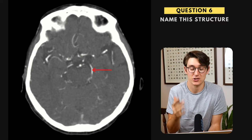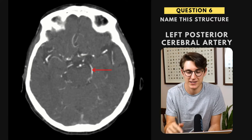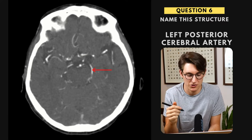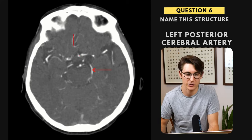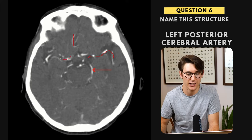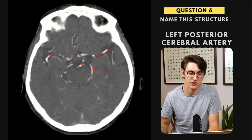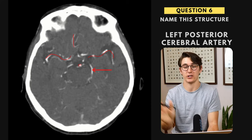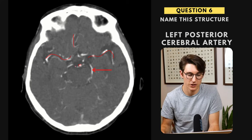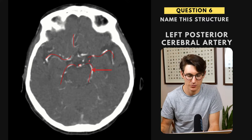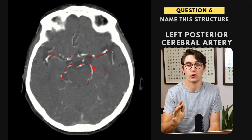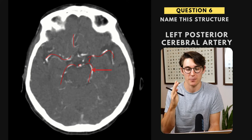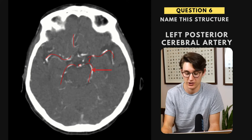Question number six, we're asked to label a vessel, and this is the left posterior cerebral artery. We're at the level of the circle of Willis. We can see our anterior cerebral artery, our MCA branching left and right, and our basilar artery centrally, which gives off our two posterior cerebral arteries. They loop backwards, and with a posterior communicating artery, they link our posterior and anterior circulation. Core knowledge — the circle of Willis: we need to know those main vessels: anterior, middle, and posterior cerebral arteries.